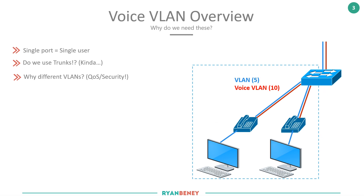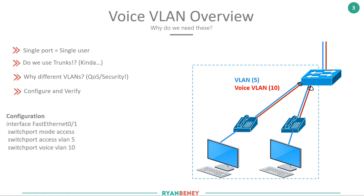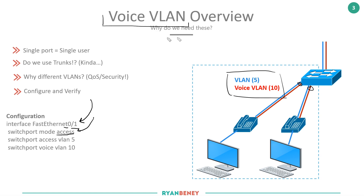The main takeaway is understanding why voice VLANs are needed and how they challenge our existing understanding of trunks and access ports. How do we configure and verify them? It's actually pretty straightforward. Under the interface configuration — for example, FastEthernet 0/1 — you set the mode as access. At this point you might think: if we're carrying two VLANs, shouldn't it be a trunk? That's how it used to be done, but now Cisco provides different syntax.